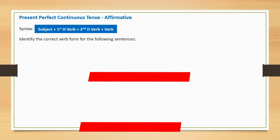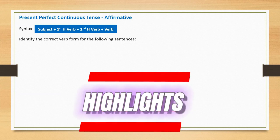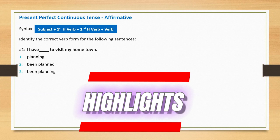Identify the correct verb form for the following sentence: 'I have blank to visit my hometown.' Option one: planning. Option two: been planned. Option three: been planning. The correct option is been planning. The complete sentence is: 'I have been planning to visit my hometown.'